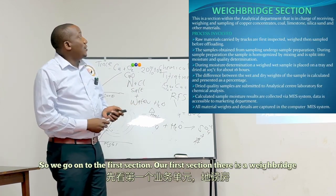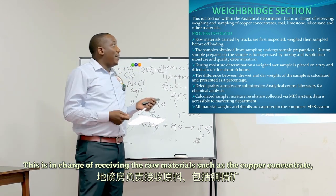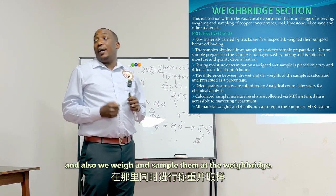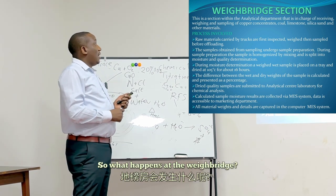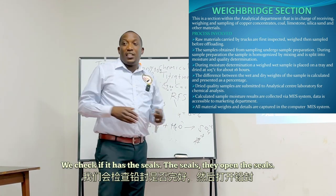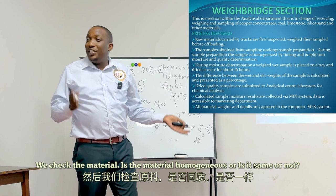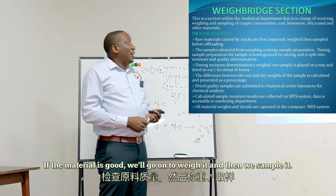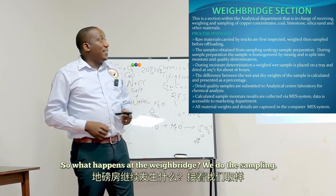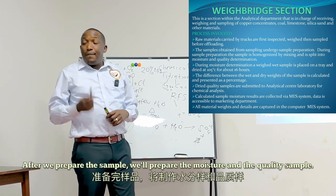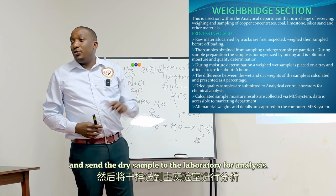The first section is the weigh bridge, in charge of receiving raw materials such as copper concentrate, weighing and sampling them, and sending samples to the laboratory for analysis. When a truck comes, it is first inspected — we check if it has seals, open the seals, open the tent, and check whether the material is homogeneous. If the material is good, we weigh it, sample it, and then the truck goes to offload. After sampling, we prepare the sample, determine moisture, and send the dry sample to the laboratory.